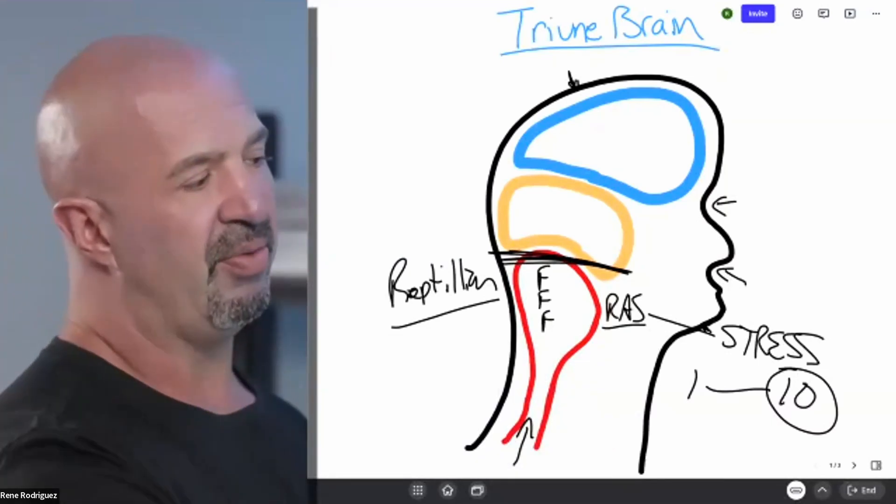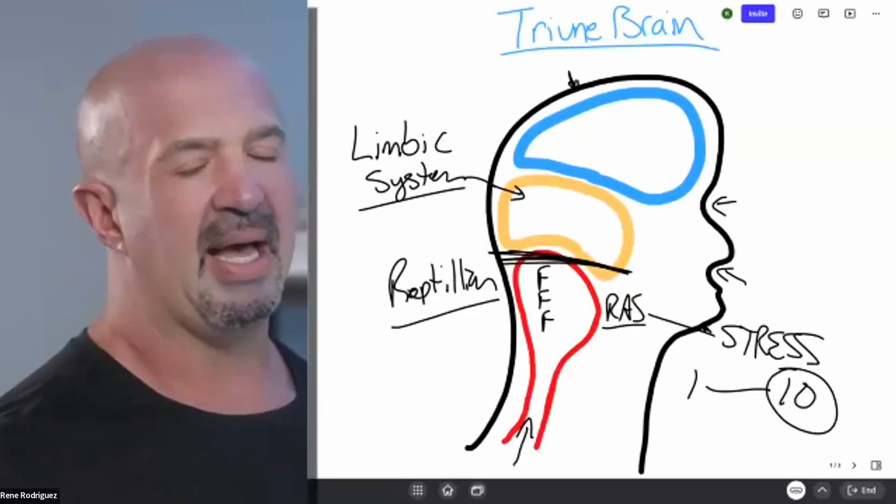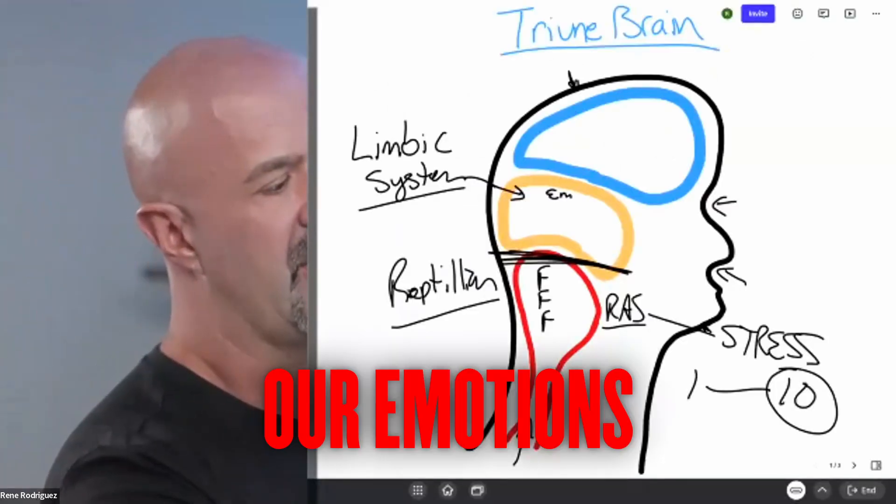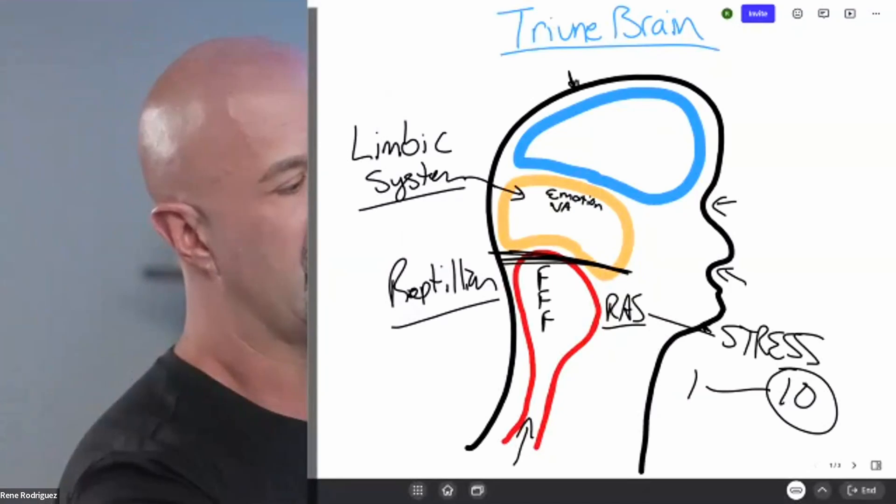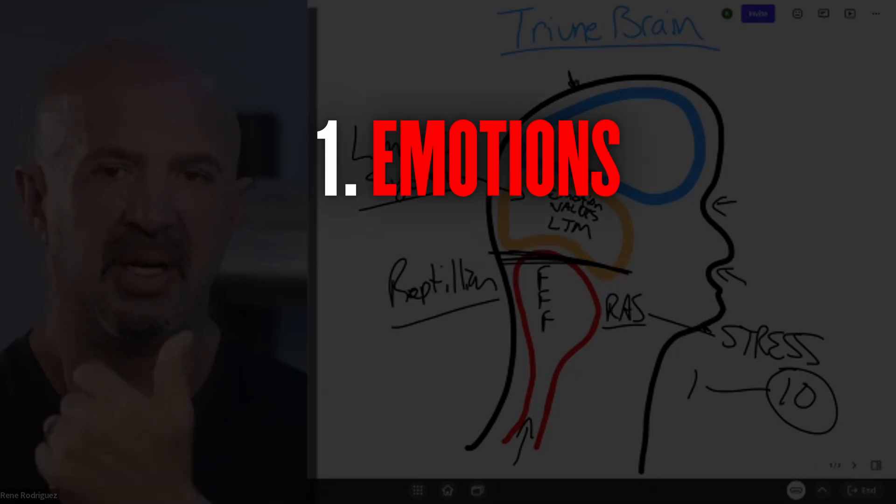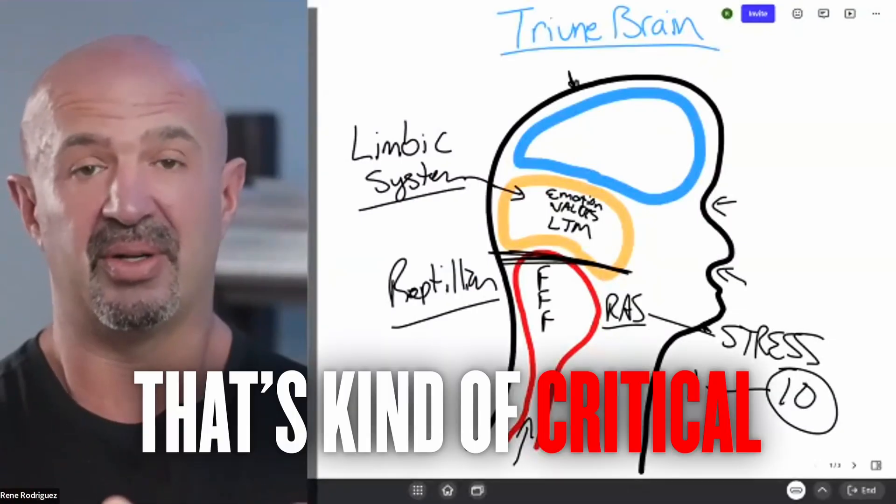And so now, as we begin to evolve, we get into this next part of the brain called the limbic system. And the limbic system has three major functions. One, it's the place where we have our emotions. It's also the home of our value center, and it's a gateway to long-term memory. This is how we decide what we remember. That's kind of critical.